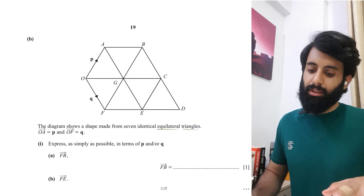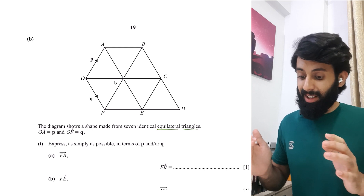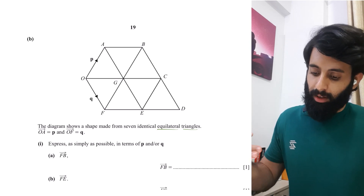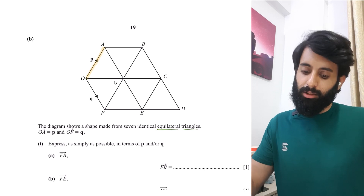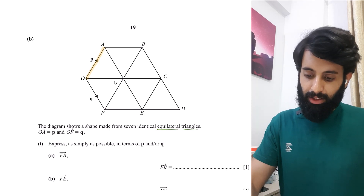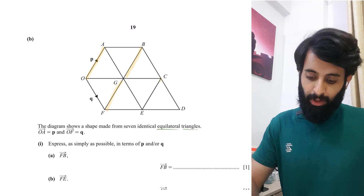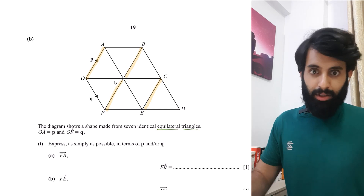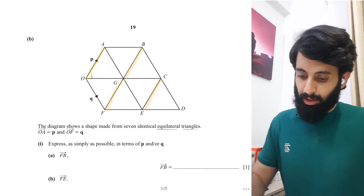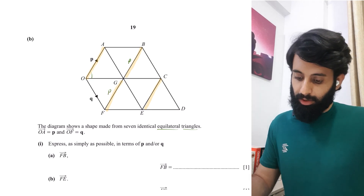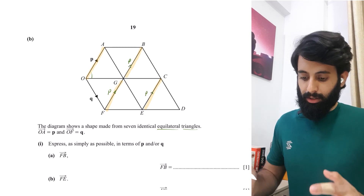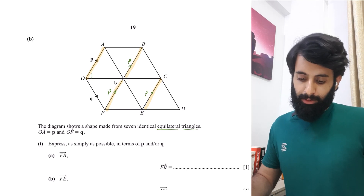If you've been watching my videos on vectors, something I always suggest is that before you read what the question is asking you to find, figure out things you can identify immediately. So this vector is P. There are a lot of other vectors which are also going to be P. Since these are all equilateral triangles, all the highlighted lines are parallel to P, meaning they're all equal to P in vector terms. Every angle is 60 degrees. So from G to B is P, and from F to G is also P.